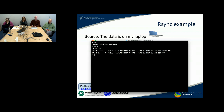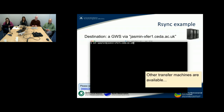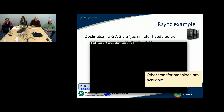So if I've got some data on my laptop — this is a screenshot of my laptop — I'm in a particular directory, I've got a file and a directory full of some other data here, and I'm going to put it onto Jasmine. The destination is a group workspace and I'm going to use jasmine-exfer1 as the machine to transfer it to, which will have the group workspace mounted.